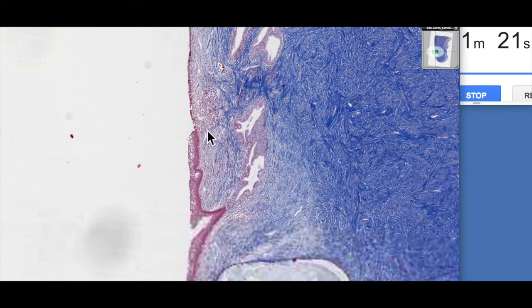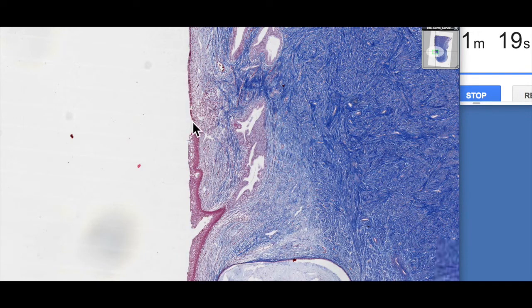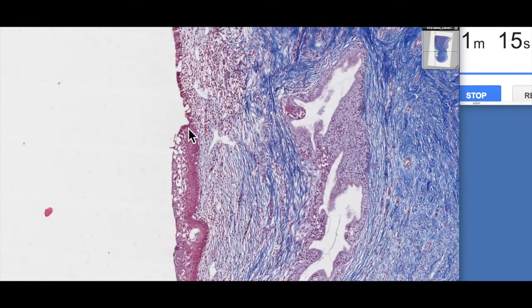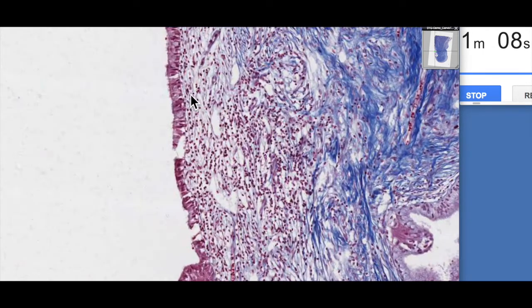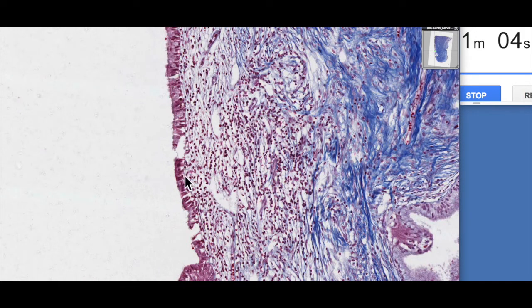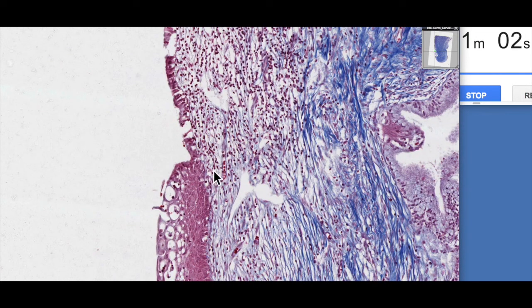We see the junction or the transition between the endocervix and the ectocervix. We can see this region here. Here's the stratified squamous non-keratinized epithelium of the ectocervix. And the endocervix is lined by a simple columnar or a pseudo-stratified columnar, ciliated columnar epithelium. You can see lots of immune cells present here.